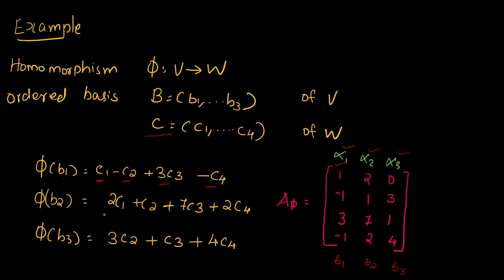For the second column, the values are 2, 1, 7, and 2. For the third column, the values are 0, 0, 3, 1, 4. So we obtain the transformation matrix for this transformation, with each column corresponding to the coordinate representation of each basis vector's image.